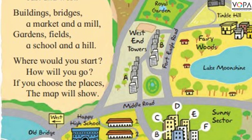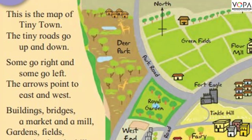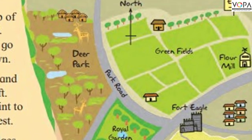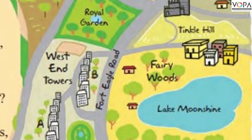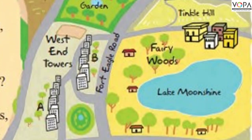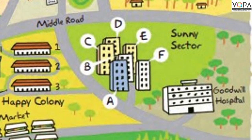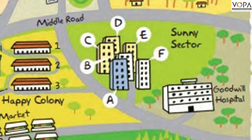Dear students, let us see what we learn in this map. This map contains green fields. After that, this map contains Lake Moonshine. After Lake Moonshine, we can see Sunny Sector and Goodwill Hospital.